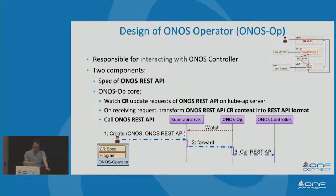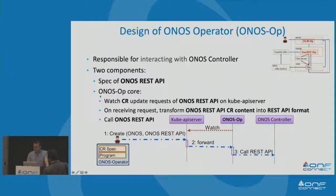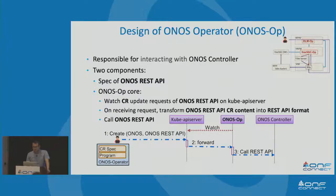For the ONOS operator, it was built using the operator SDK tool and is responsible for interacting with the ONOS controller. This operator has two components: the spec of the ONOS RESTful API, and the ONOS operator core, which watches the custom resource update request of the ONOS RESTful API on the Kubernetes API server. When a request is received, it transforms the ONOS RESTful API custom resource content into REST API format and calls the ONOS northbound RESTful API.